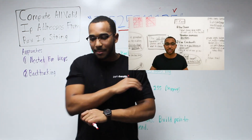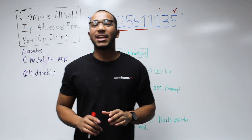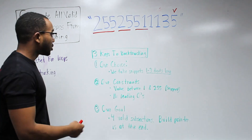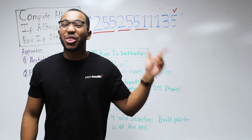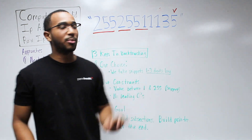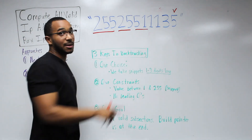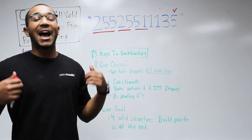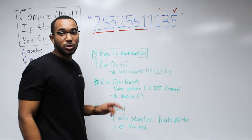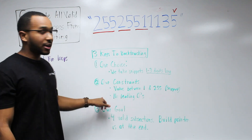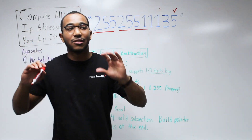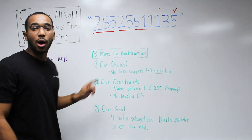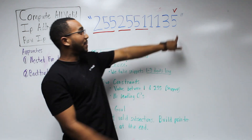The three keys to backtracking are: our choice, our constraints, and our goal. Our choice is taking snippets one to three digits long and validating each before moving on. Our constraints are: no snippet longer than three characters, value must be between 1 and 255, and no leading zeros — if either constraint fails, we don't explore that path. Our goal is to take four valid subsections, and we know we're finished when we have four valid subsections and our build pointer is at the end.